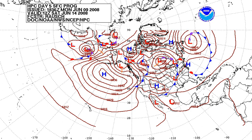For millennia people have tried to forecast the weather. In 650 BC, the Babylonians predicted the weather from cloud patterns as well as astrology. In about 350 BC, Aristotle described weather patterns in Meteorologica. Later, Theophrastus compiled a book on weather forecasting called the Book of Signs. Chinese weather prediction lore extends at least as far back as 300 BC, which was also around the same time ancient Indian astronomers developed weather prediction methods.